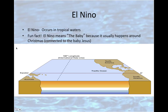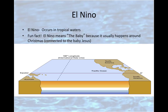El Niño is when something abnormal happens. It occurs in tropical waters, meaning near the equator, so we don't feel the effects as much in California, although we will feel them. It was called El Niño because typically this weather pattern usually happens around Christmas, and so people are thinking about the baby Jesus. In Spanish, baby is said El Niño — so that's where the name comes from.